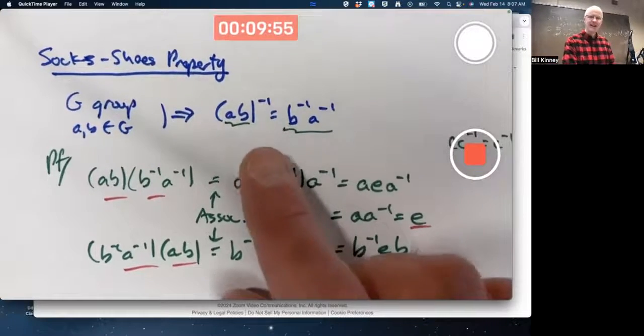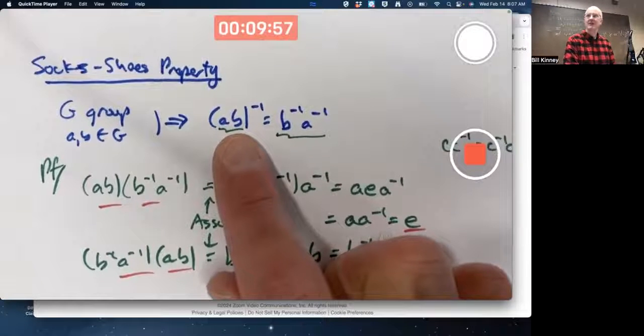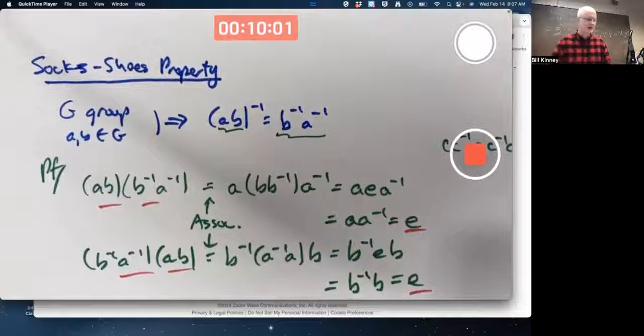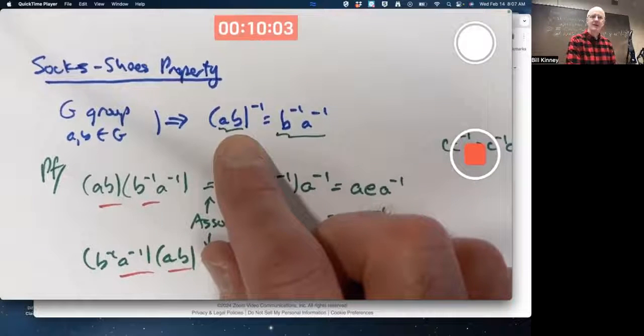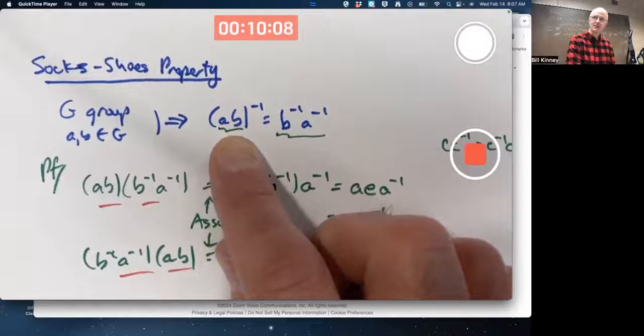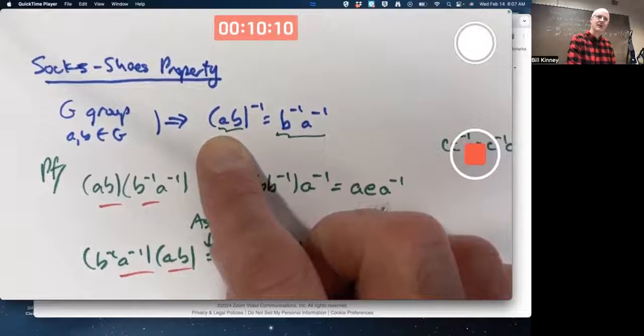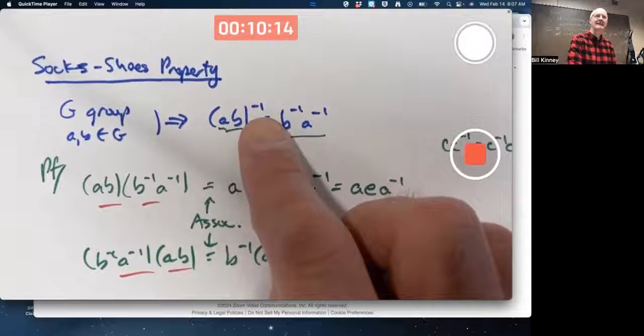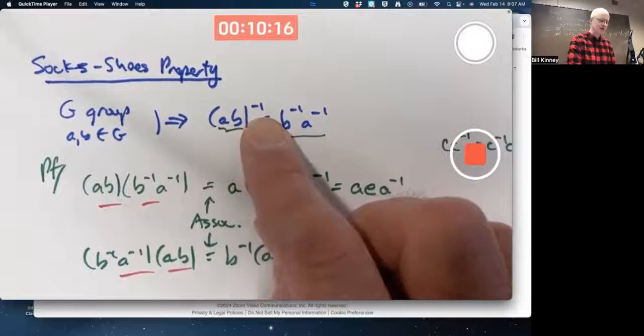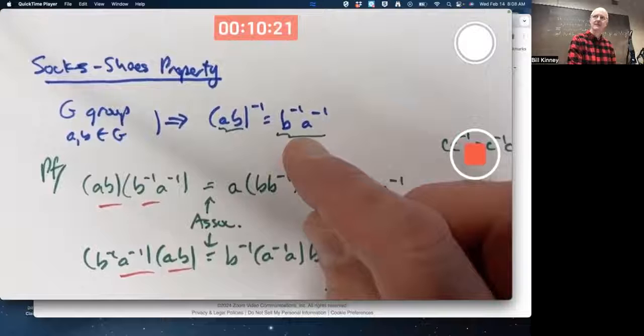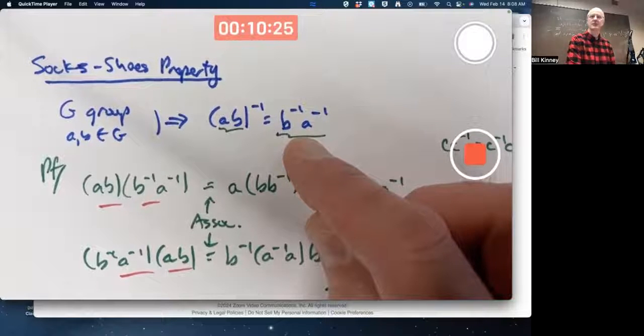So if pretend these are functions and putting your socks and shoes on are like functions, they're operations. B gets done first, work from right to left. Put your socks on before your shoes are on. So B is putting your socks on, A is putting your shoes on. How do you reverse that? The inverse over here, going from right to left, take your shoes off first, then take your socks. That's why it's called the sock shoes property.